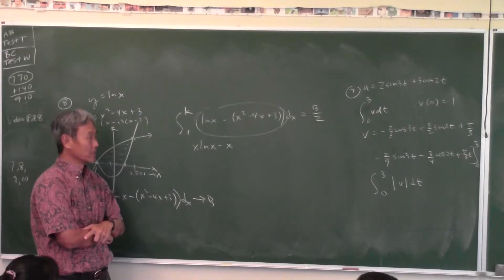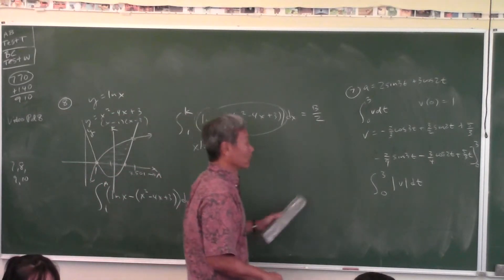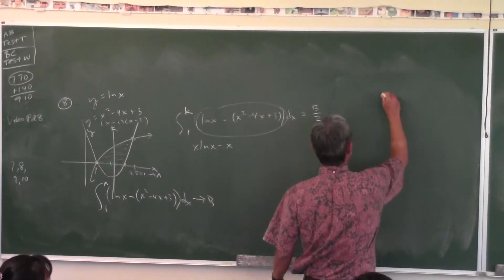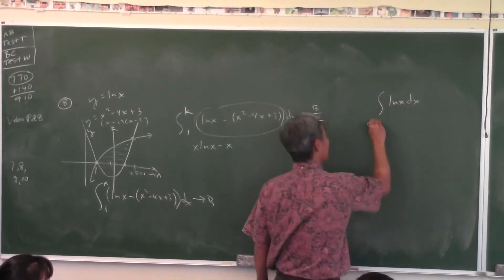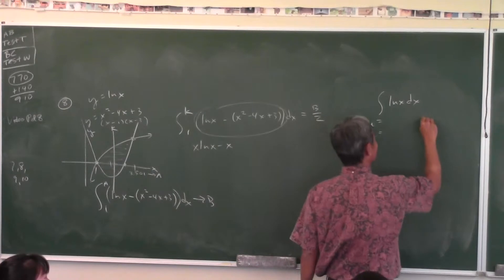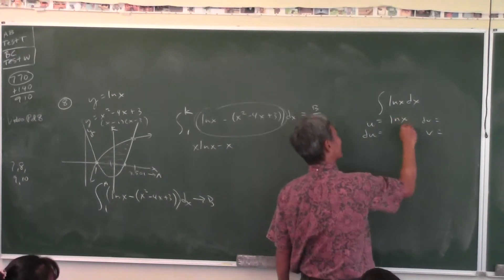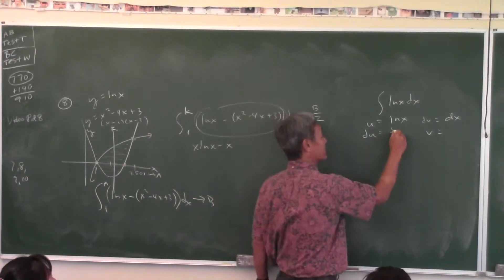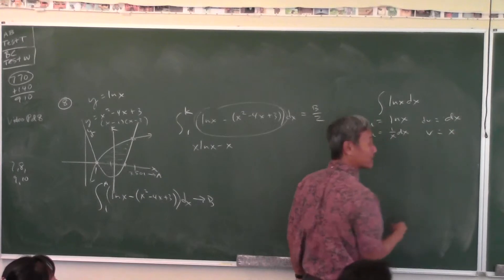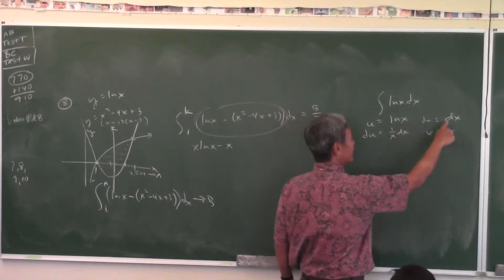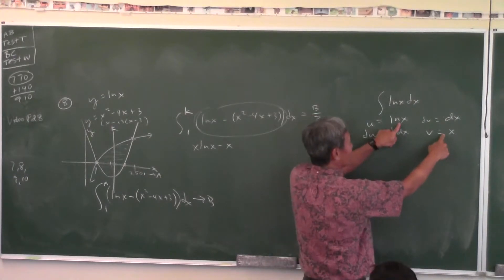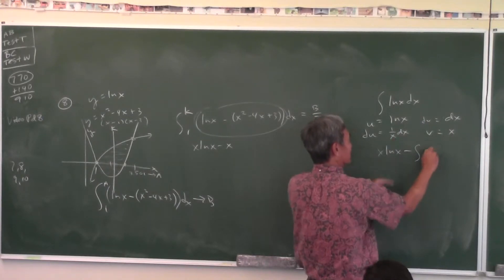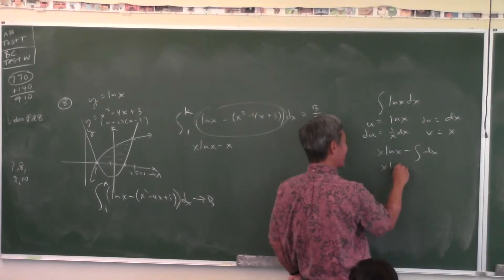If you don't remember that, then integration by parts. You put natural log x here. The integral of u dv, which is the thing we're trying to find, is equal to u times v minus the integral of v du. What's the derivative of x? dx. So isn't that x ln x minus x plus C? Yes — the entire antiderivative of natural log x is x natural log x minus x.